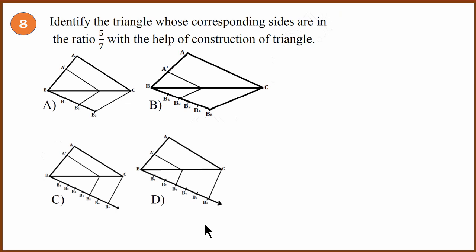Identify the triangle whose corresponding sides are in the ratio of 5 is to 7 with the help of construction. So we have 5 is to 7, 5 divided by 7. This is 2 divided by 3 scale factor. This one is 2 divided by 5 scale factor. This one is 5 divided by 7 scale factor. This one is 3 divided by 6 scale factor.